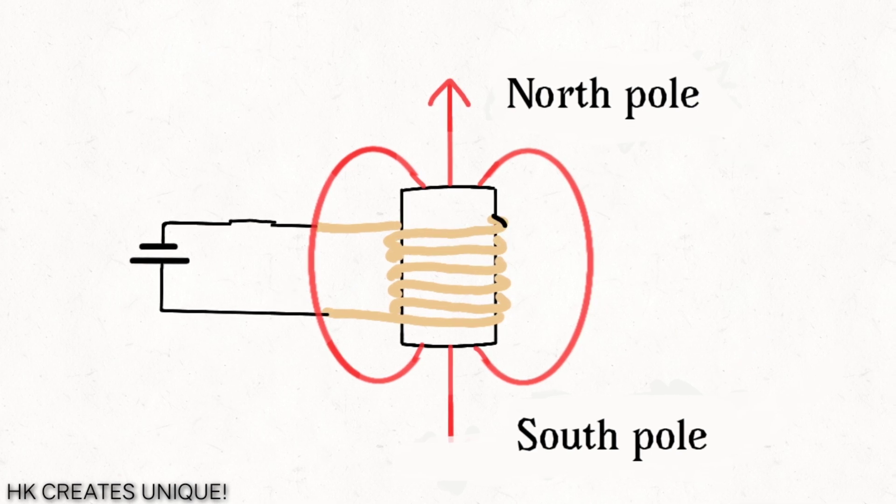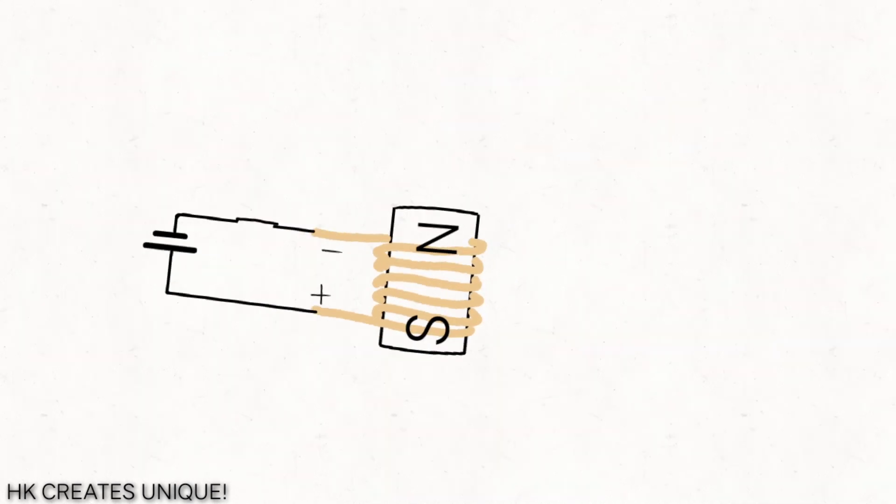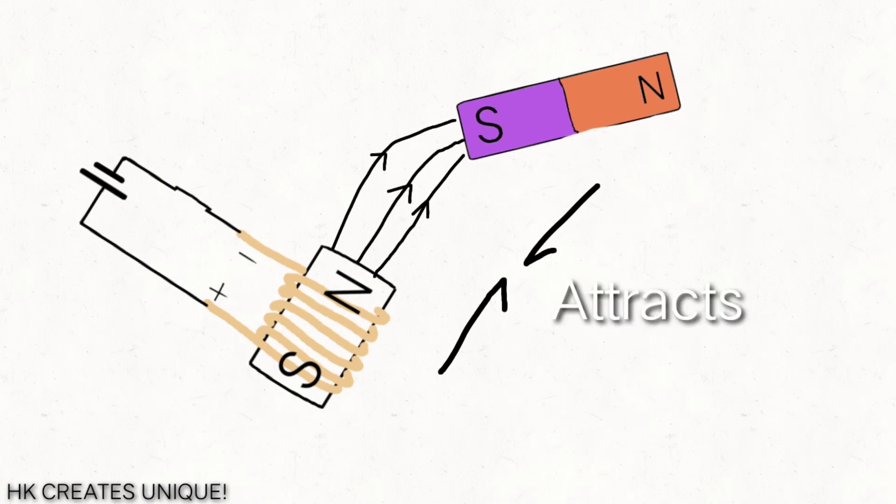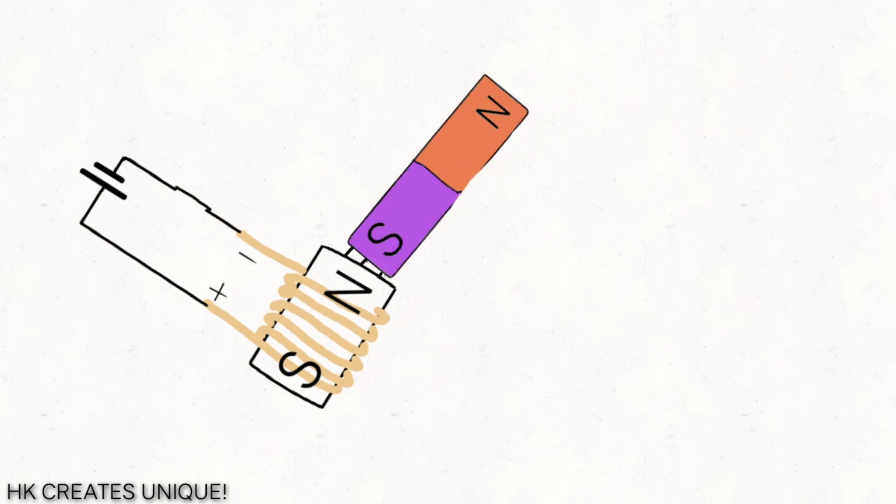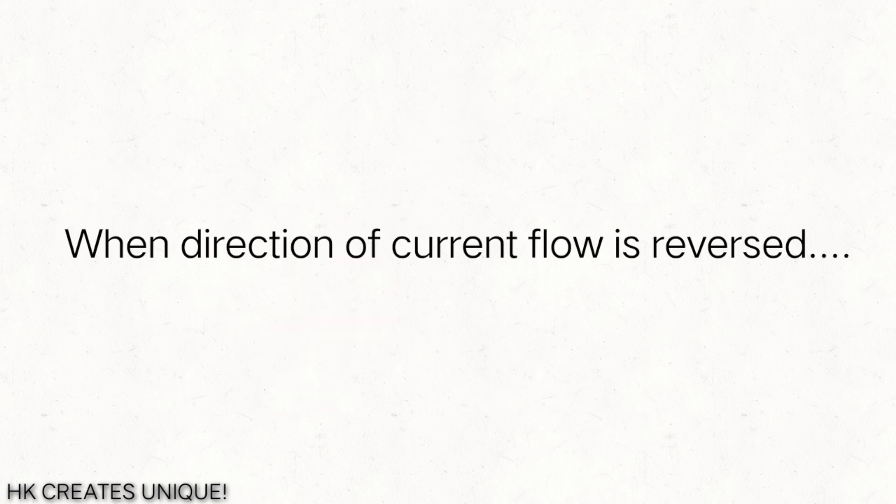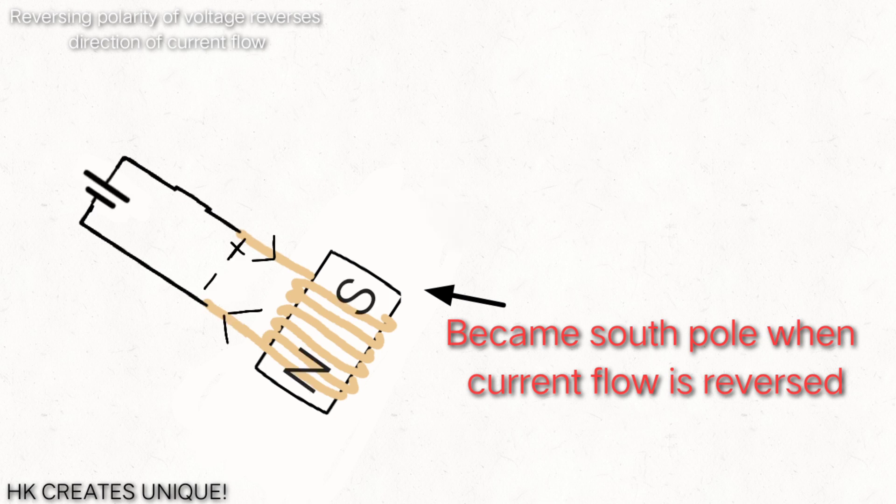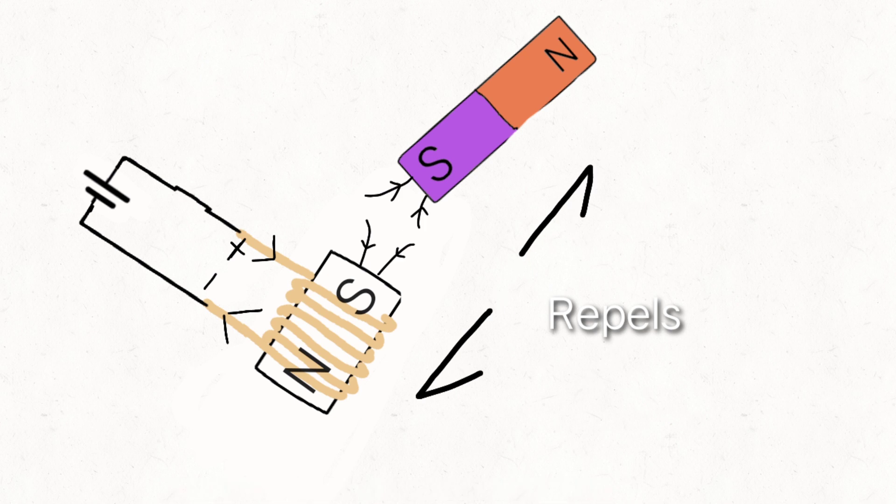If we keep a bar magnet near the coil, the north pole of the coil will attract the south pole of the bar magnet. When direction of current flow is reversed, the north pole of the coil becomes the south pole. And as we all know, same poles repel one another.